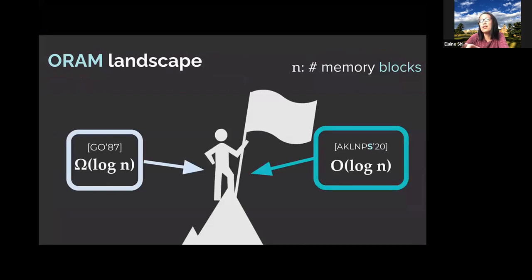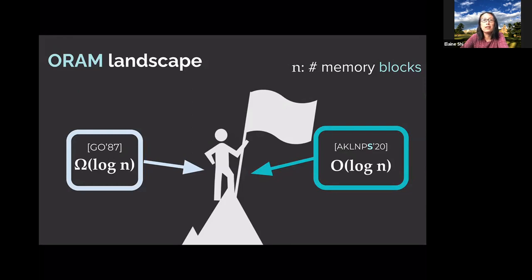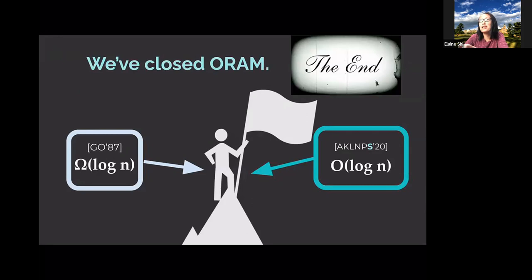We've studied ORAM for more than 30 years. There is a log-n lower bound: any ORAM scheme must incur at least log-n overhead, shown in Goldreich and Ostrowski's original paper. For a long time it wasn't clear whether log-n was attainable, but in very recent work with my students and collaborators we showed that you can indeed construct an optimal ORAM with log-n overhead. So it took 30 years, but we finally closed ORAM at log-n.